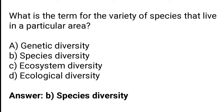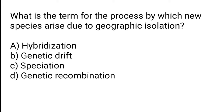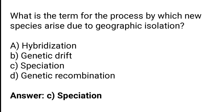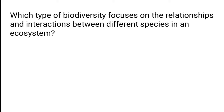What is the term for the process by which new species arise due to geographic isolation? A) Hybridization, B) Genetic drift, C) Speciation, D) Genetic recombination. The correct answer is option C — speciation is the term for the process by which new species arise due to geographic isolation.